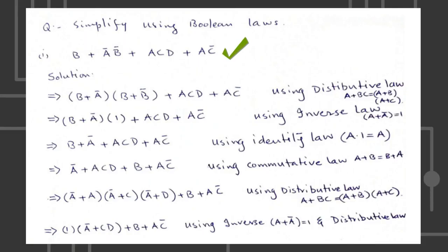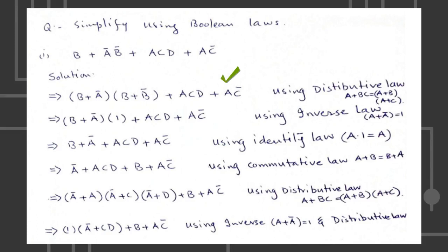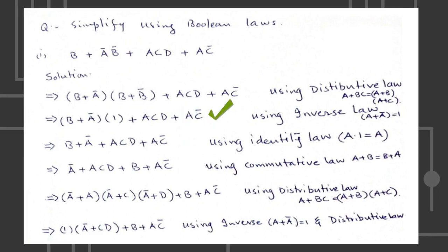Let's see another example of simplifying Boolean expression. We have been given B plus A bar B bar plus ACD plus AC bar to simplify. First two terms can be replaced using distributive law of Boolean and written in this form. Then we can use inverse and identity laws to further simplify.